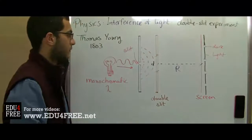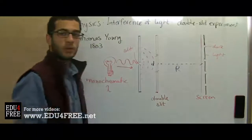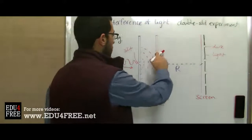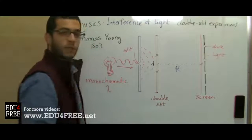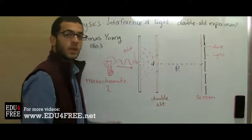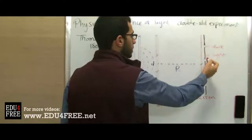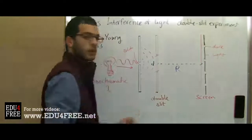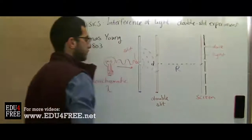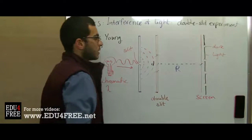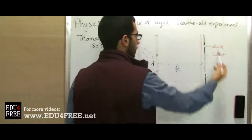These are called fringes, and this is caused due to the interference of light. When the light passes through two sources, interference takes place. At some parts, constructive interference takes place and accordingly light fringes appear, and in some parts destructive interference takes place where the dark fringes appear.